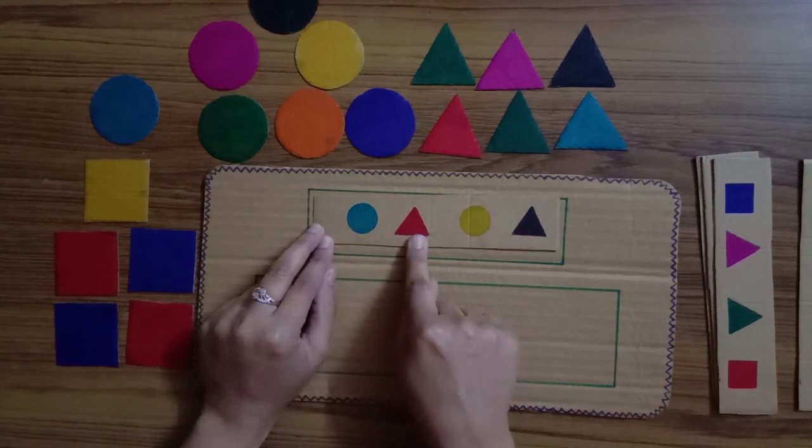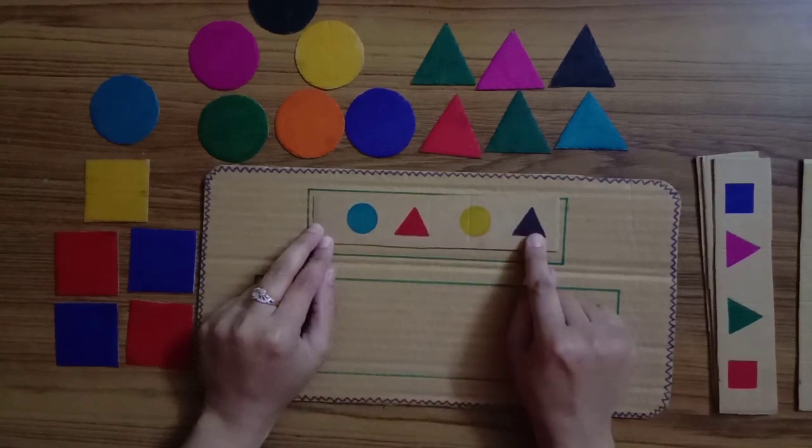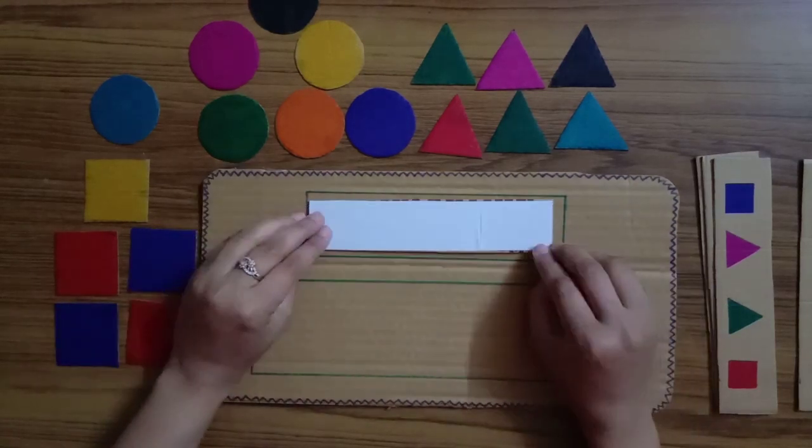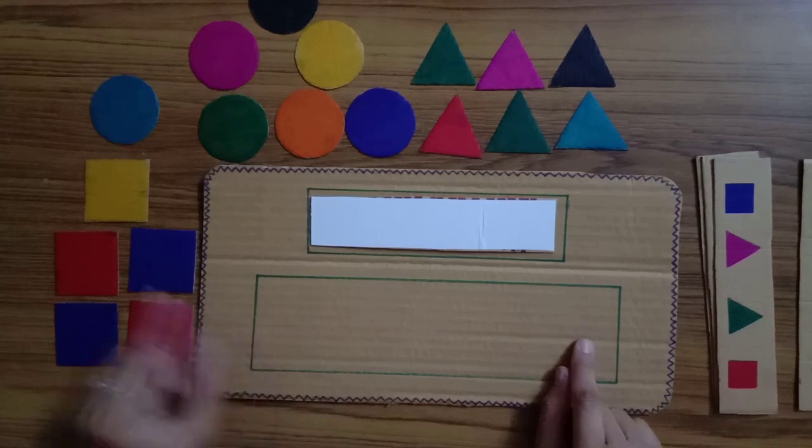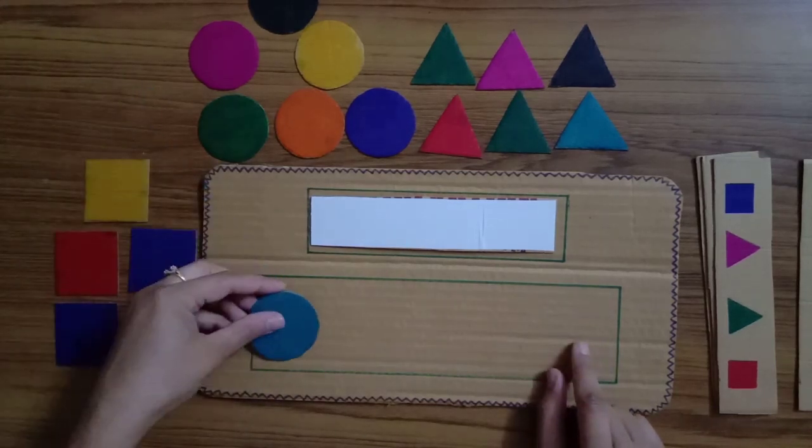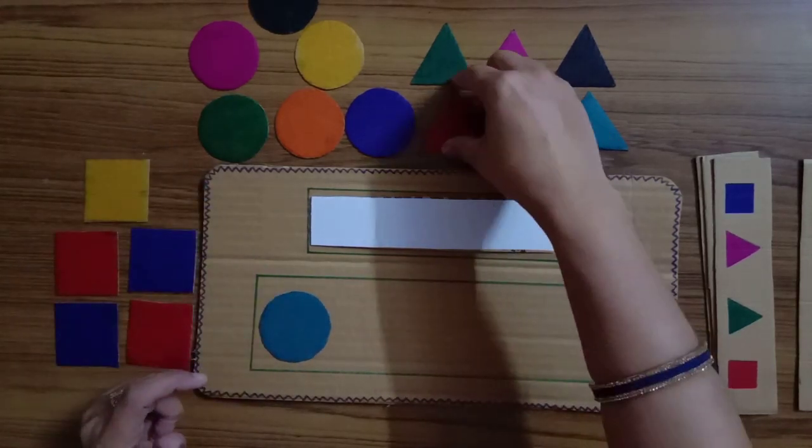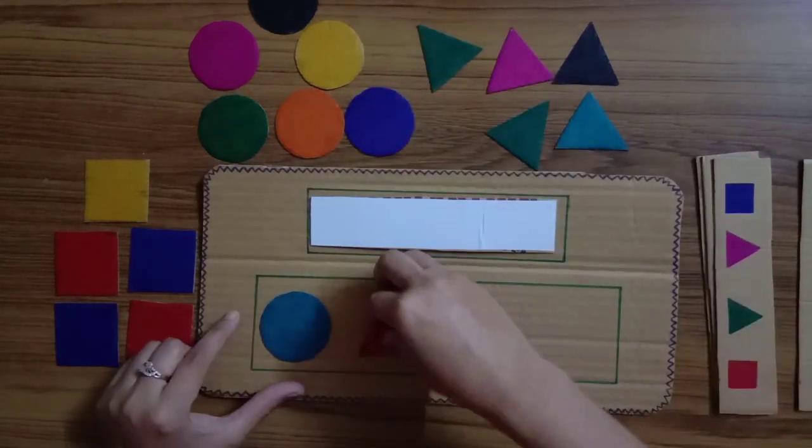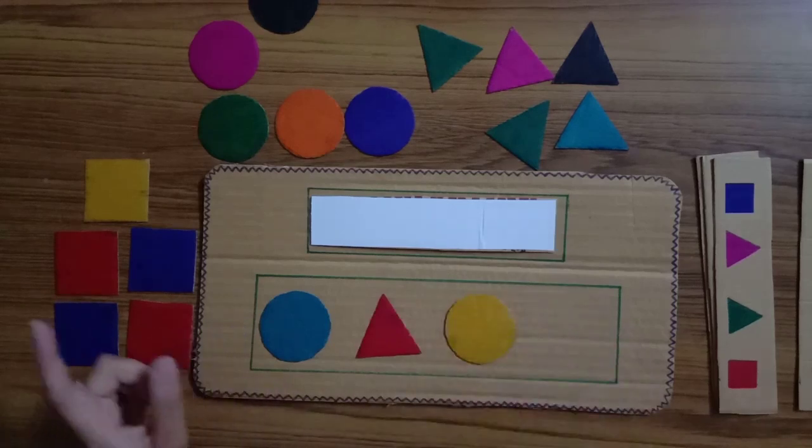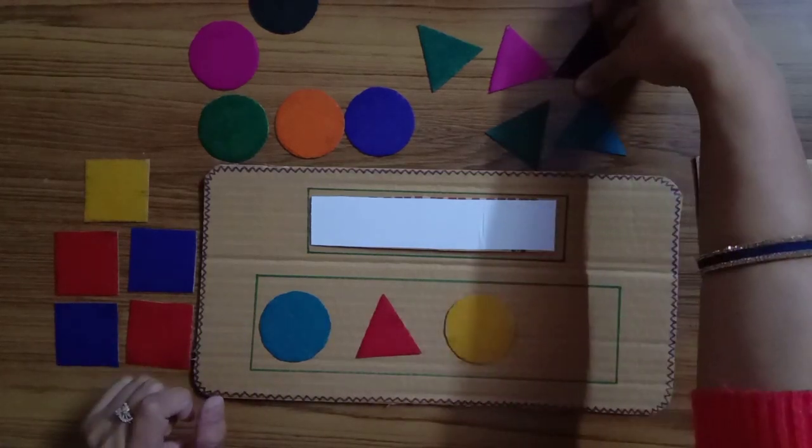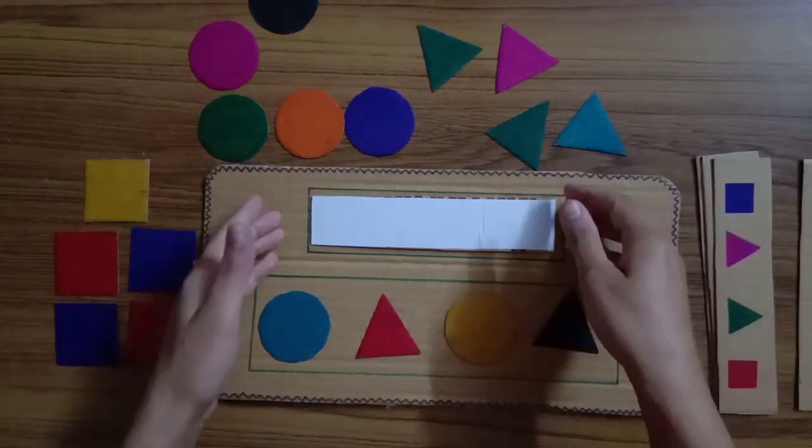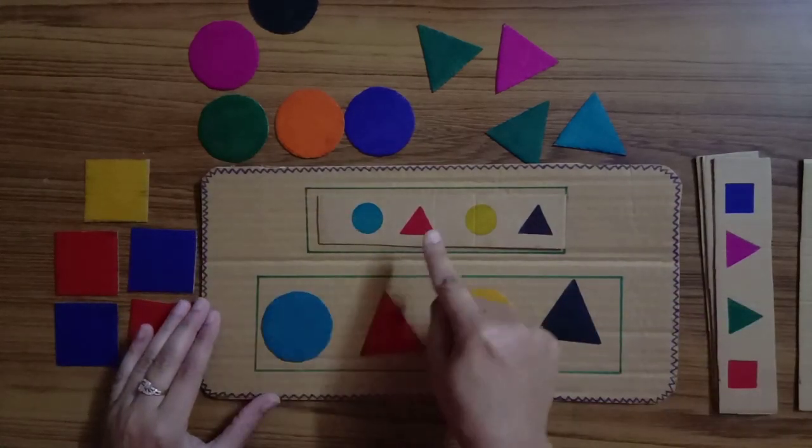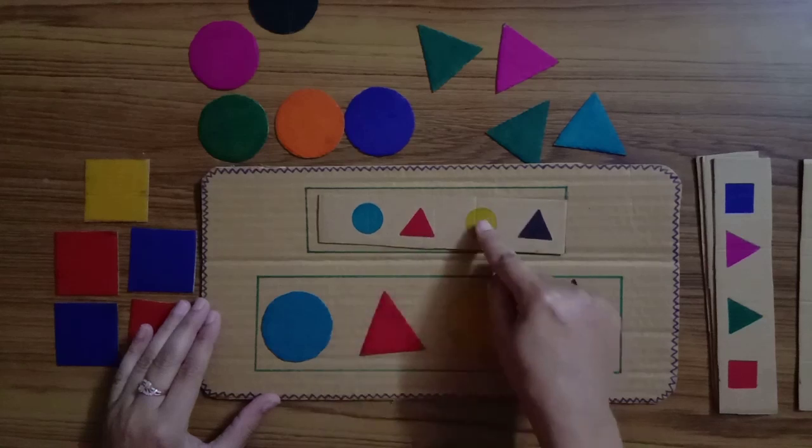Now flip it back and ask the child to put all the shapes here again. So blue circle, then it should be red triangle, then yellow circle, and then a black triangle. Flip it back and see: here we go, blue circle, red triangle, yellow circle, and a black triangle.